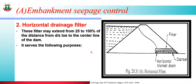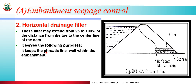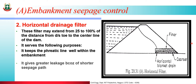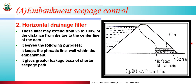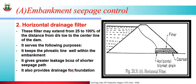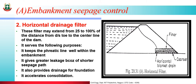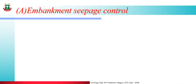The horizontal drainage filter serves the following purposes: it keeps the phreatic line well within the embankment, it makes the phreatic line of the central drainage filter, it gives greater leakage because of a shorter seepage path, and it also provides drainage for the foundation and accelerates consolidation.